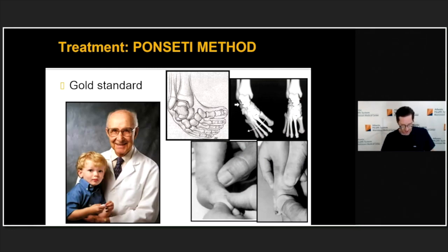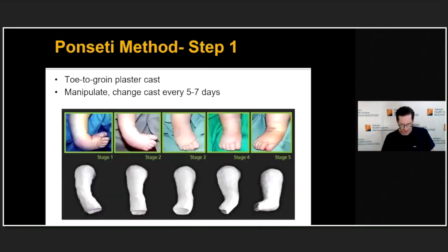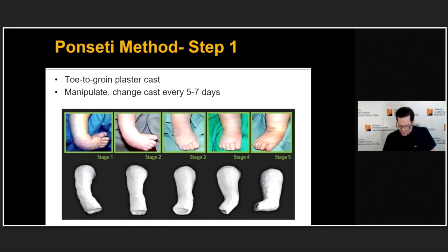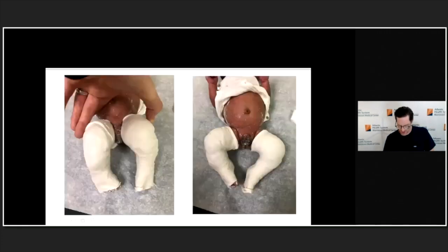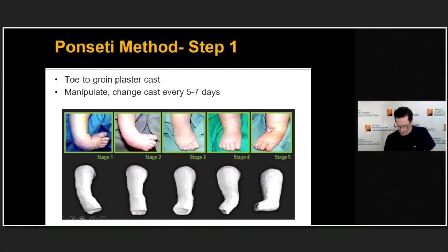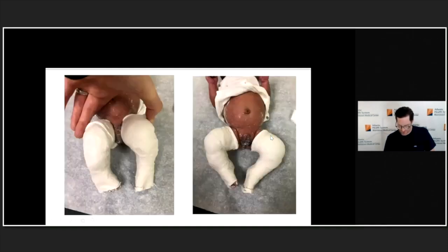The world owes a debt of gratitude to Ignacio Ponseti, who unfortunately passed away a few years ago. He developed the Ponseti method, which is the gold standard for treatment of club feet worldwide. The Ponseti method involves three basic steps. The first is a series of castings — usually plaster casts from groin to toe, changed every five to seven days. Before each cast, the foot is manipulated using the technique described by Ponseti. Here is a newborn at about three weeks of age in her first cast.